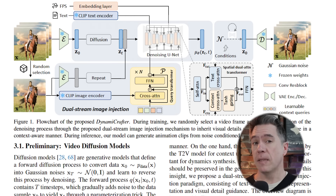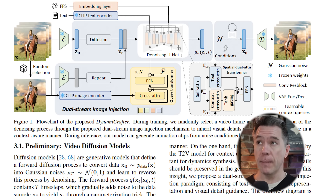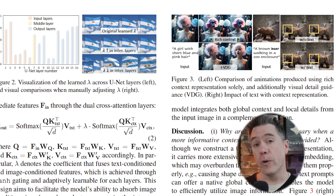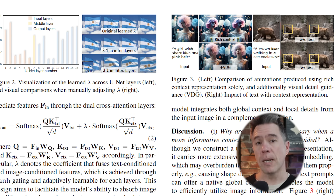Their solution involves dual streaming, which does seem to be a recurring theme with this current crop of AI video generators. The basic idea is that one stream takes your reference image through a CLIP interrogator so the model has an understanding of what it's looking at, while your text prompt runs down another stream, met with a fine-tuned guidance model. Those two streams are then put back together, resulting in a much more temporally coherent video output.